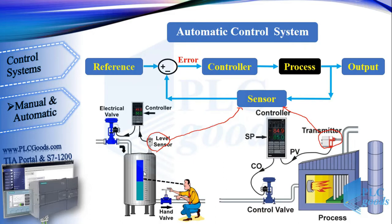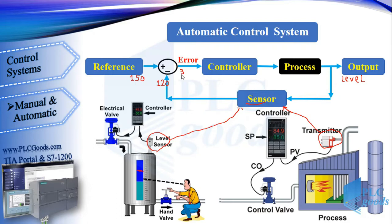Let's explain this diagram. Assume that the liquid level inside the tank should be 150 centimeters — this is the reference value. The output we want to control is the liquid level. Suppose the level sensor connected to the controller shows 120. The difference between the reference value and the actual value is 30, so based on this difference, the controller knows the actual level is less than the reference value and will decide to turn on the inlet valve to increase the liquid level.